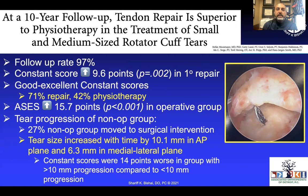Looking at the likelihood of healing, we've historically used therapy for many of these patients. A 10-year follow-up paper examining physiotherapy for small to medium tears found 97% follow-up. Constant scores were about 10 points higher in the repair group — 71% good to excellent versus 42% in the therapy group. ASES scores were about 16 points higher in the operative group. Tear progression was seen in 27% who moved to surgical intervention, with tears progressing approximately 10 mm in the AP direction and 6 mm medially.